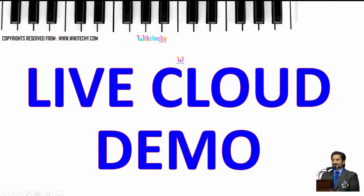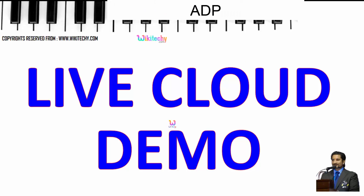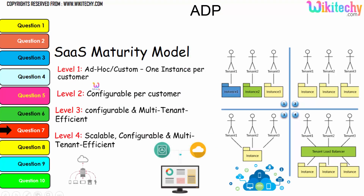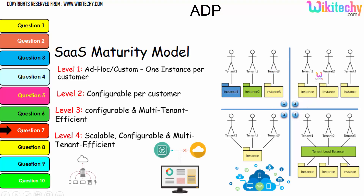We are going to see the live cloud demo in this video. You are able to see level one here — one instance per customer. And here is level two, configurable per customer. You can see the same color and it is a different color. So instance one, instance two, instance three.